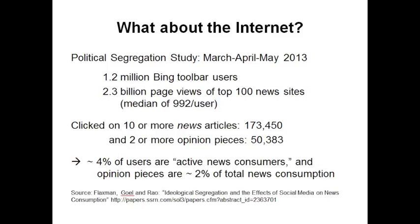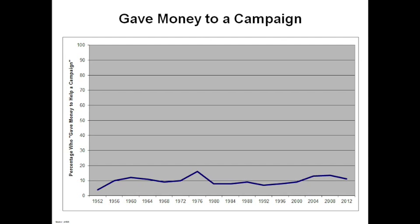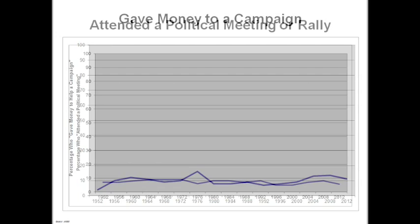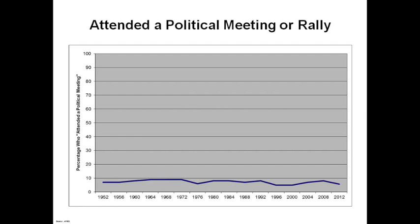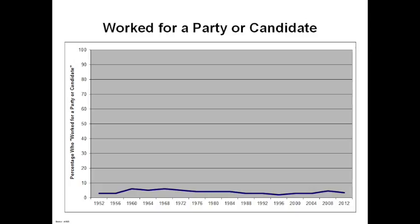Over time, the extent to which people participate has been very small. About 5% of the population historically ever attends a political meeting or rally. Working in a campaign is about 3% or so. Despite all the publicity around Obama, when you look at things people actually did — everything is within the range of sampling error. Democrats were really excited in 2008, Republicans were depressed. In 2004, Republicans were excited, Democrats were depressed. But basically, on average, it evens out.